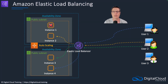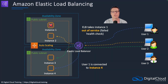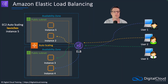This is where the load balancer, with integration into auto scaling, can notify auto scaling that this instance is not responding to health checks, and auto scaling will terminate and then replace that instance. User one is actually reconnected from instance one to instance four so that their session continues. The ELB takes instance one out of service because of the failed health check, auto scaling terminates it, and then replaces it — so now we have instance five replacing the first instance that was terminated. We now have that level of availability and fault tolerance across multiple availability zones.